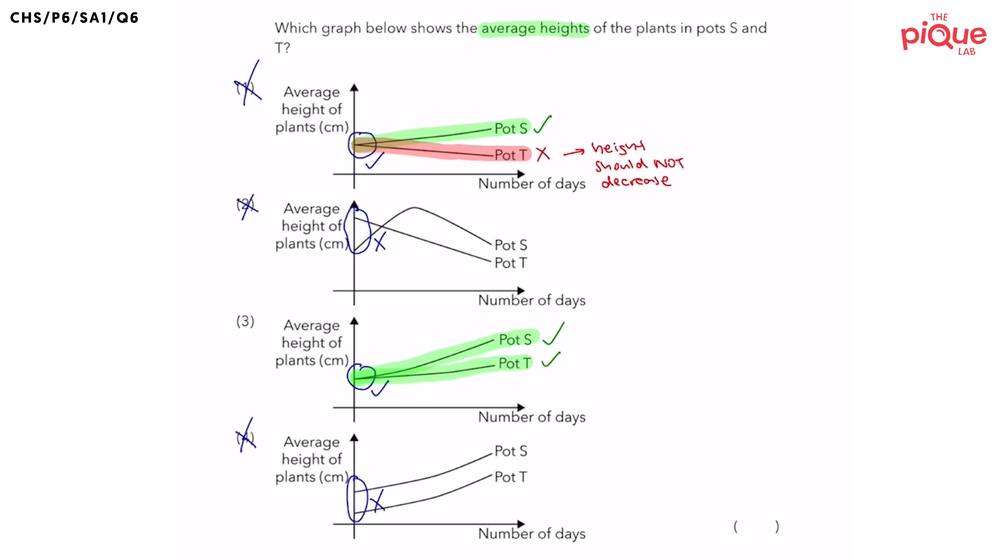But if we look closer, what is the difference between pots S and pots T? We can see that the average height of the plants in pots S is increasing faster, right? So this tells us that the plants in pots S are growing taller faster.